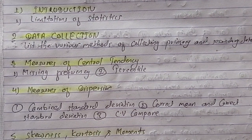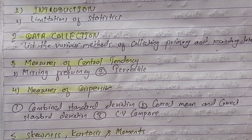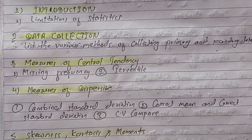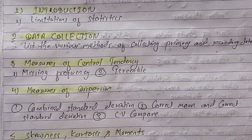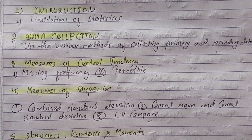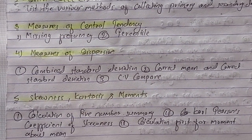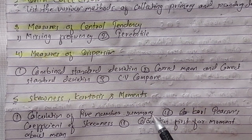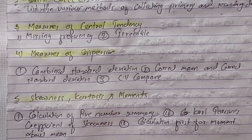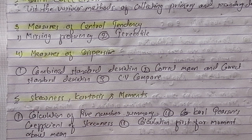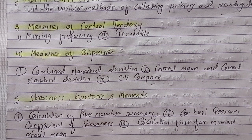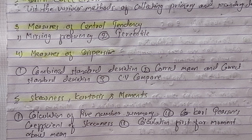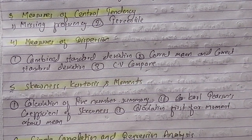Measure of dispersion is an important chapter. Combined standard deviation, correct mean and correct standard deviation. The coefficient of variation is important for comparison. There are tips and tricks videos already made that you can find in the playlist. Chapter 5 covers skewness and moments. Calculation of five number summary is very important. Five number summary calculation, coefficient of skewness, and calculation of the first four moments about mean. These three are very important and you need to understand how to apply their formulas. I've already made videos on this chapter.